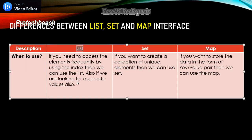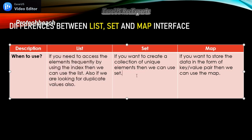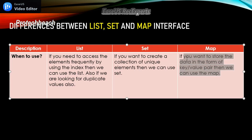When to use each: Use List if you want to allow duplicate values and need to access elements frequently by index. Use Set when you don't want any duplicate values — it will keep only unique values. Use Map whenever you need a key-value pair concept.